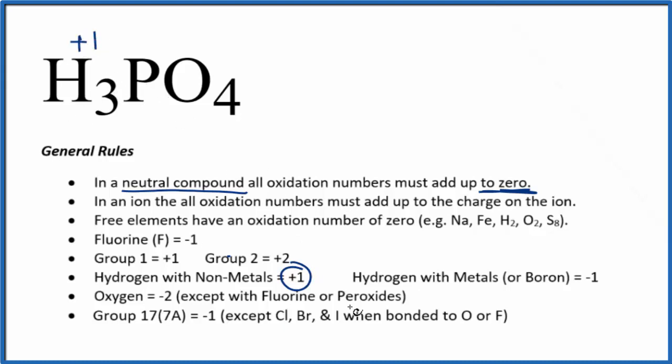The phosphorus, we don't see that on our list here, so let's just call that X. And then oxygen, that's going to be minus two, with just a few exceptions. So each one of these four oxygens is minus two.